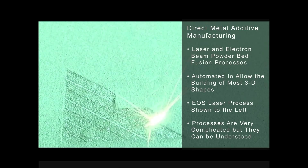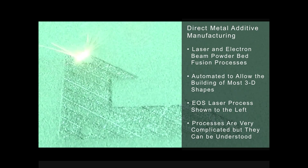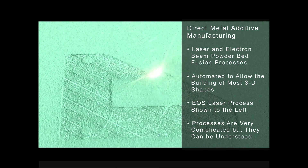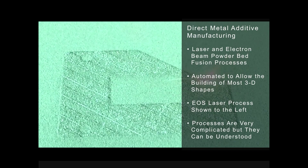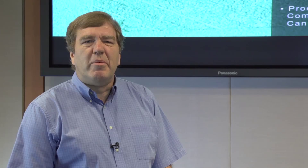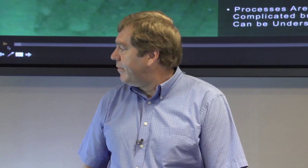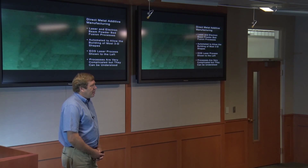This is taken from our EOS M290 machine. You can see it fills in the shape of the layer in what they call stripes — the laser is rastering back and forth across each stripe. That last part was the contours on the inside and outside surfaces. Currently, with these types of processes you can build almost any three-dimensional shape. They seem very complicated, but they can be understood and manipulated and used like a manufacturing process.